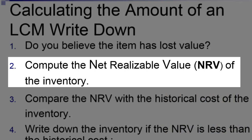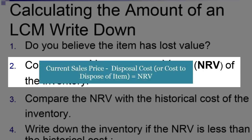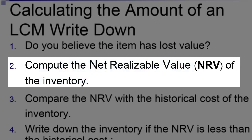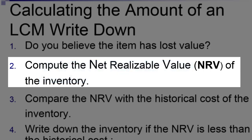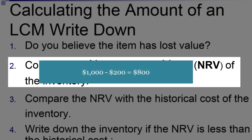The net realizable value is a really simple calculation: we take what we think we can sell it for right now, minus what it will cost us to sell that item. For example, if I'm Walmart and I have clearance items marked at $50, there's no additional cost, so I take $50 minus zero — my net realizable value is $50. On the other hand, if I'm a construction company that produces sheds for people's backyards, in addition to the price I think people will pay, I also have to ship them and get them installed to sell them. I take the $1,000 I think I can get minus $200 in delivery and installation charges, so my net realizable value would be $800.